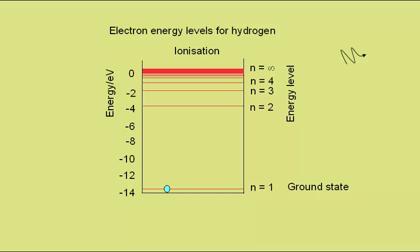Other combinations are also possible. For example, it could go from n equals 4 to n equals 2, and then down to n equals 1, and so on.